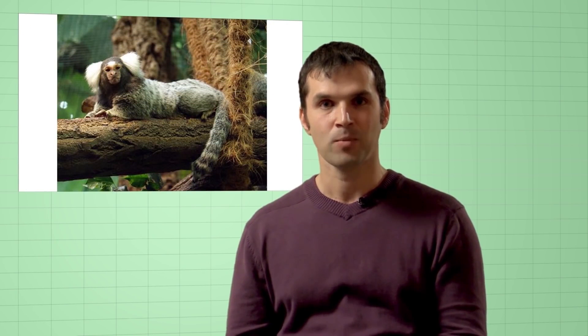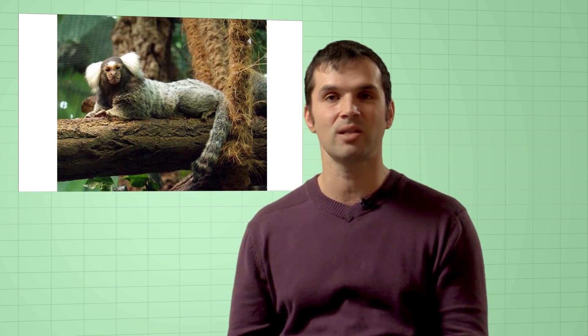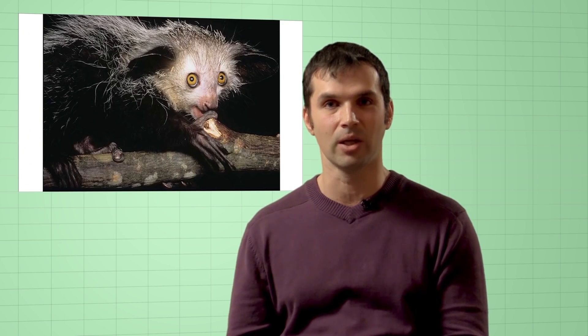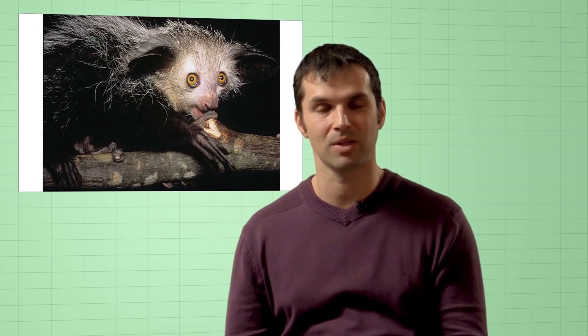But callitrichids, a cute little monkey species from South America, don't have wisdom teeth at all. Their third molars disappeared completely. We also consider our reduced canines to be an advanced feature. But the aye-ayes, lemurs native to Madagascar, have no canines at all. In that sense, they have left humans far behind.